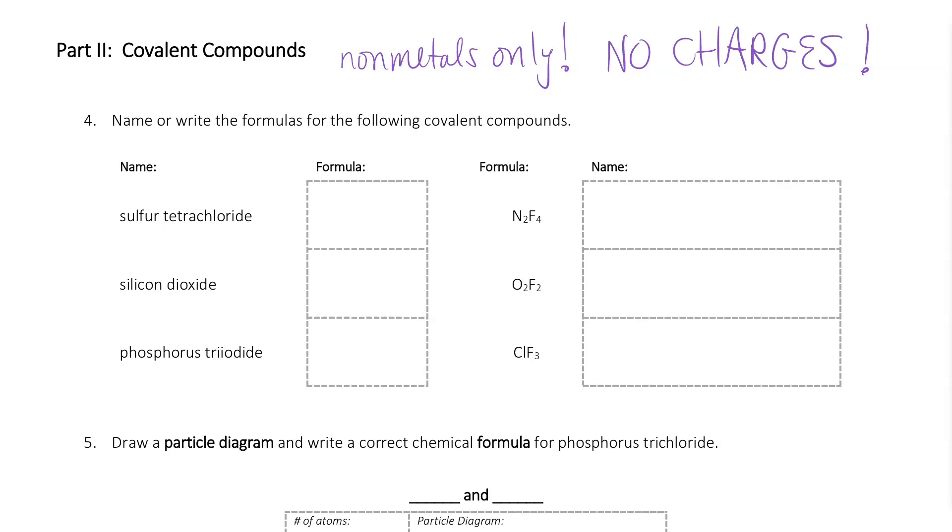So, going from name to formula is really easy. The prefixes tell you how many. Sulfur tetrachloride is SCl4. Silicon dioxide is SiO2. And then phosphorus triiodide is going to be PI3.